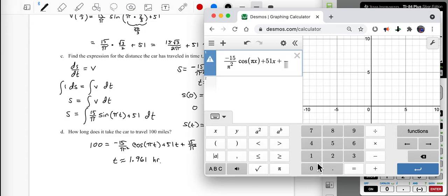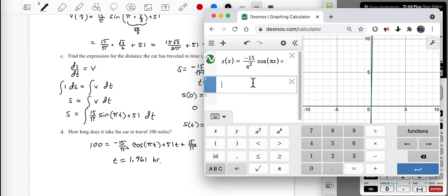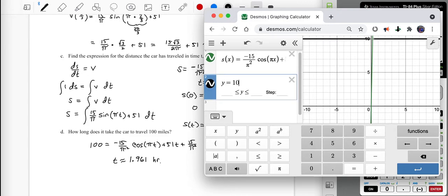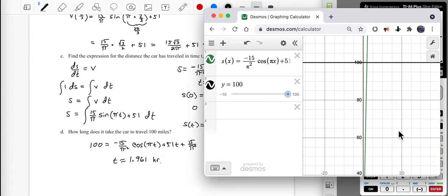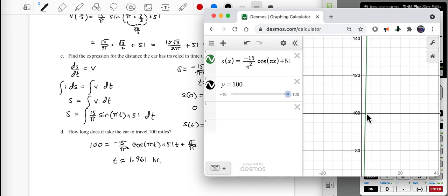Under functions, you'll see trig. You'll see cosine. So I grab that. Pi x, 51x. It modifies the graph every time I put a new term in, a new entry. So that's kind of cool. Division, 15 over pi squared.